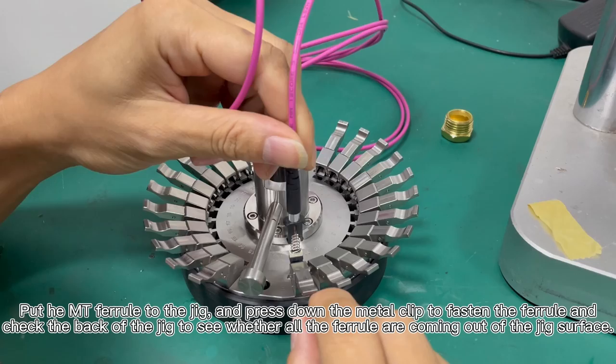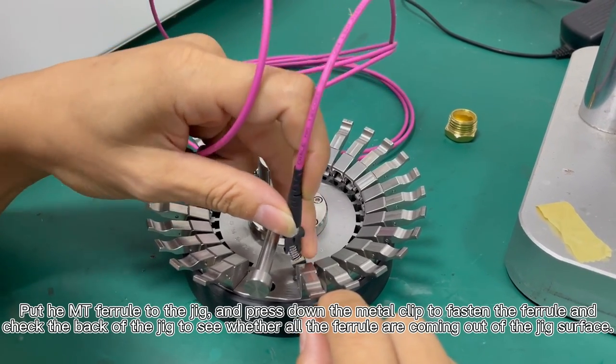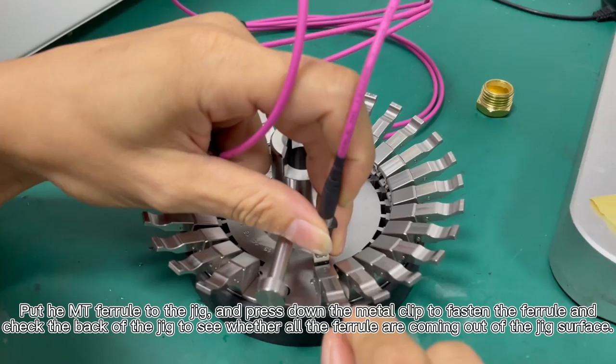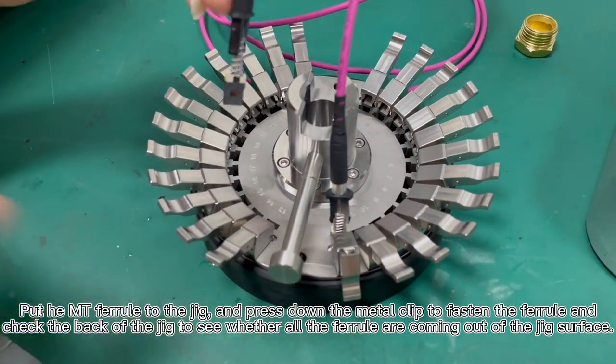How to assemble the MTB fabric to the jig. First, put the fabric into the hole, and then press the fasten button.